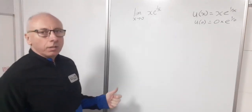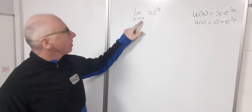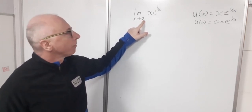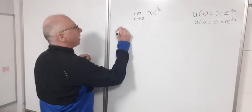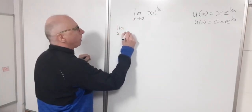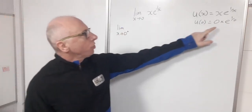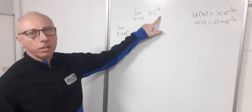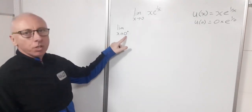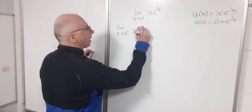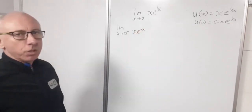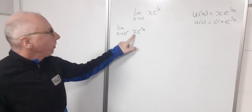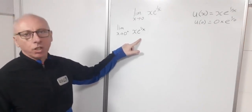What I'm proposing is we find the limit from either side — approaching 0 from the negative side and from the positive side. To avoid the infinity situation, I'm going to turn this into a form suitable for L'Hôpital's rule. To use L'Hôpital's rule we need a fraction so we can take the derivative of the numerator and denominator.